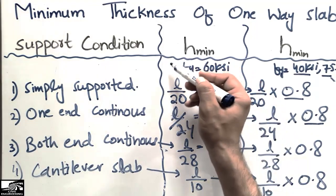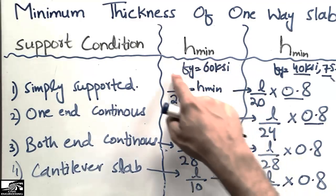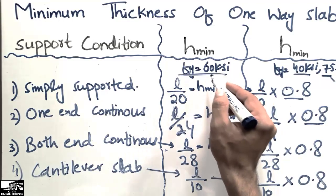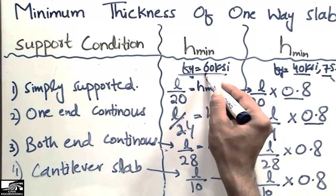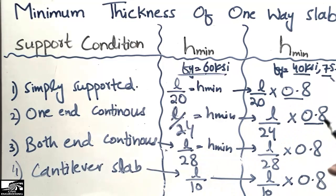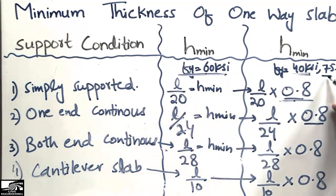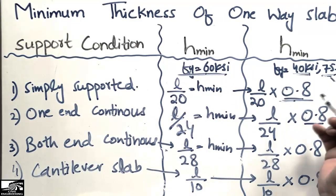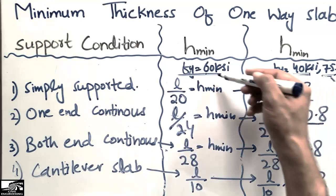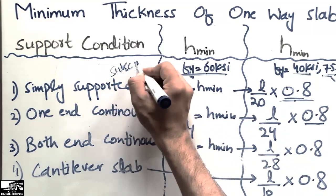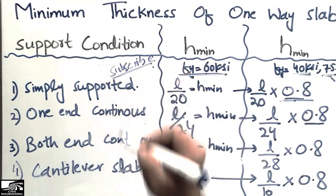These are all the minimum thickness values for one-way slabs. Remember that all these values — l/20, l/24, l/28, and l/10 — correspond to grade 60 steel. For grade 40 steel, multiply all values by 0.8. For grade 75, calculate the factor using 0.4 plus fy/100,000 and multiply accordingly. Hope you understand — don't forget to subscribe for more civil engineering videos!